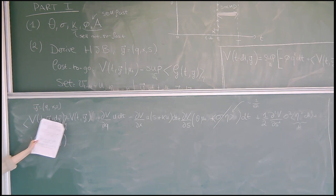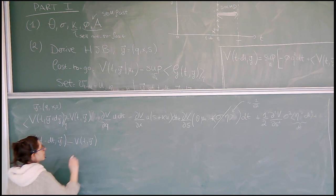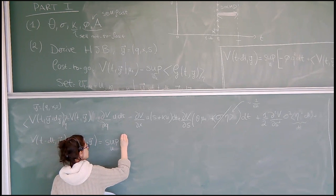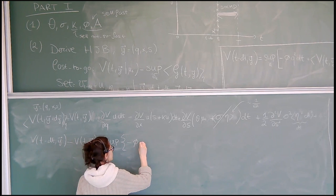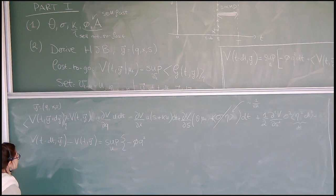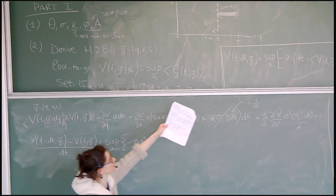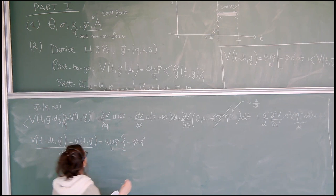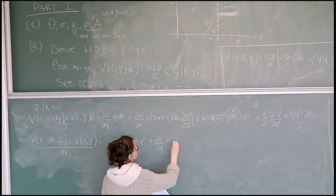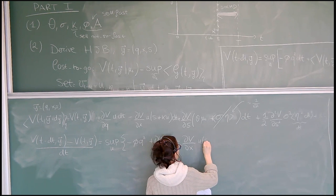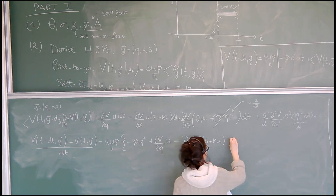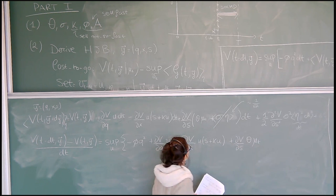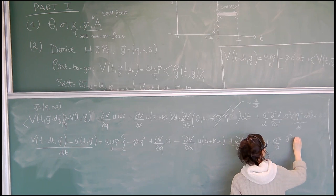So the terms are: minus phi*Q² — the cost in the little interval dt — then dV/dQ times U, plus dV/dX times (minus U*S plus kappa*U), plus dV/dS times theta*mu(t), plus sigma²/2 times the second derivative of V with respect to S squared. Taking the limit of dt going to zero, on the left hand side I get minus the time derivative of my cost to go with respect to t.